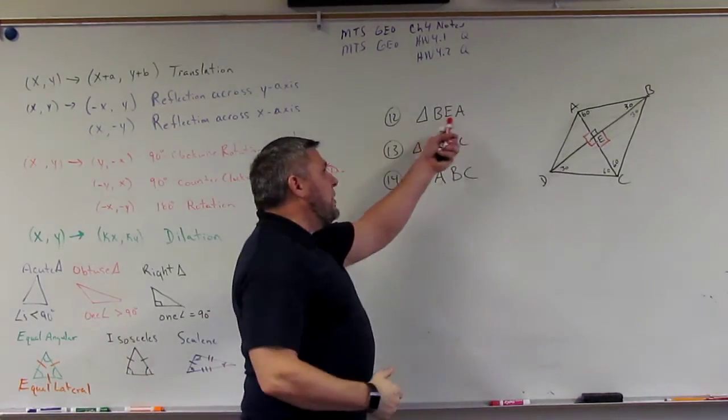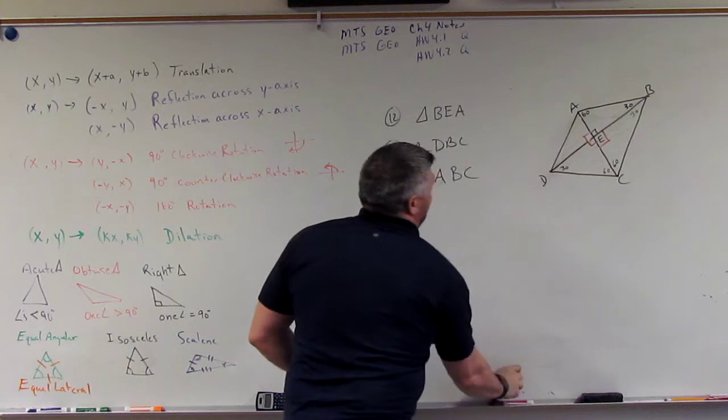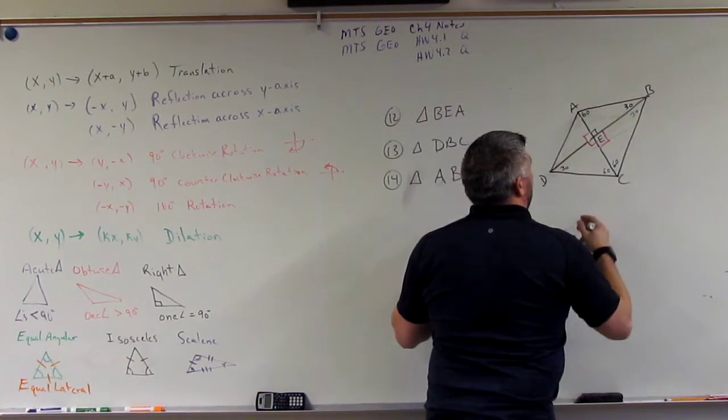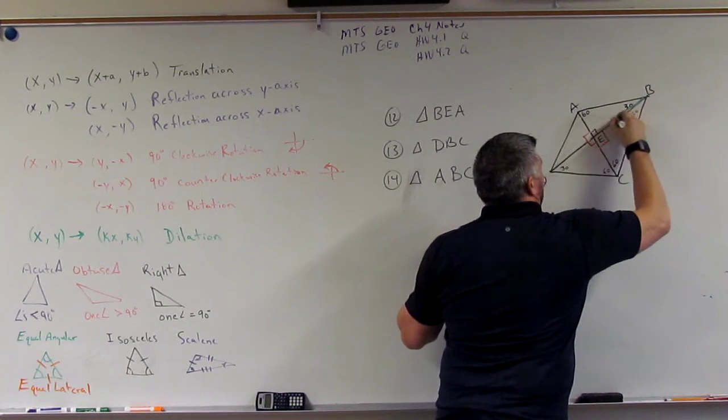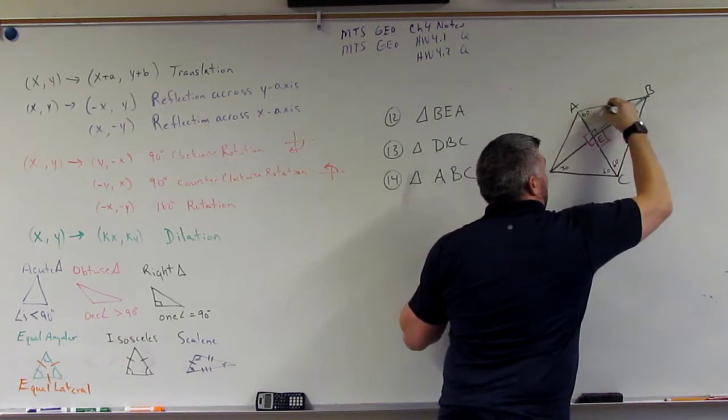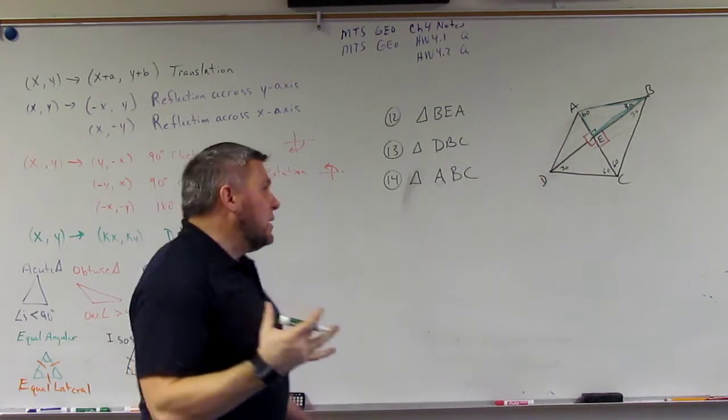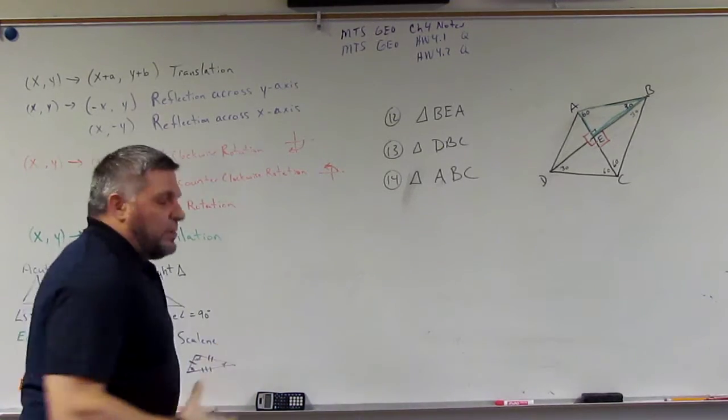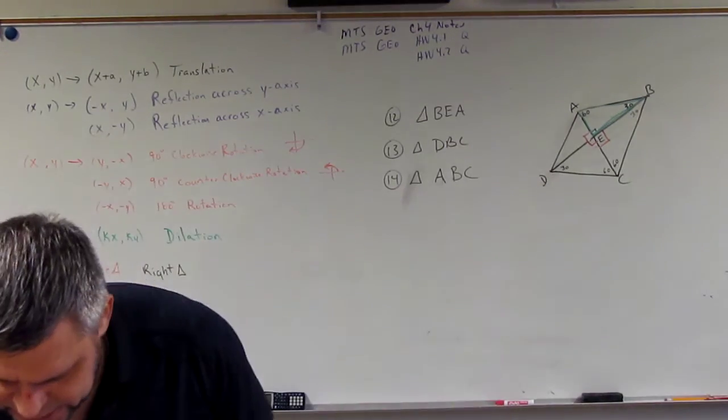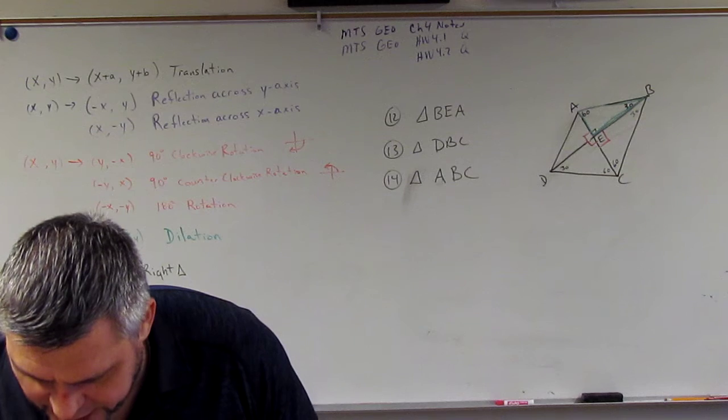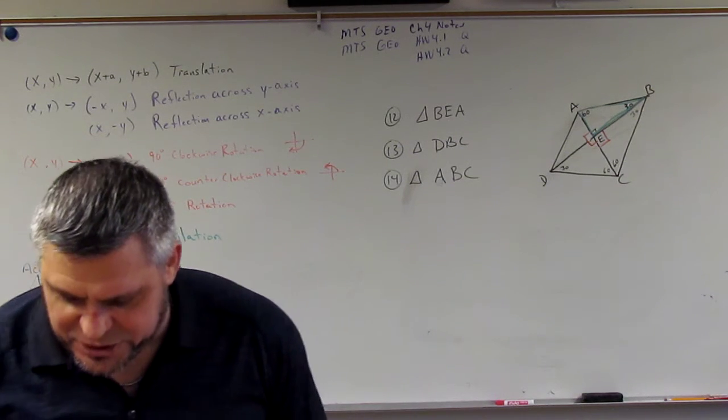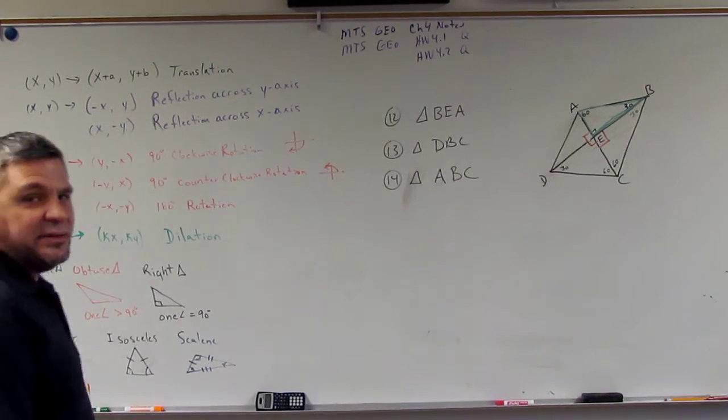Now, they want to know BEA. So, let's take something like green and try to figure out BEA. So, B, E, and A, that would be this triangle. Does that make sense? Okay. And what do they want to know about it? They want to classify it. Okay. So, they want you to classify each triangle.